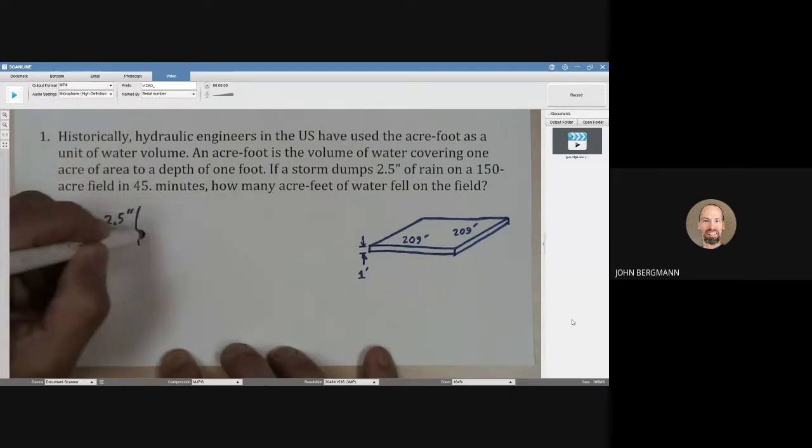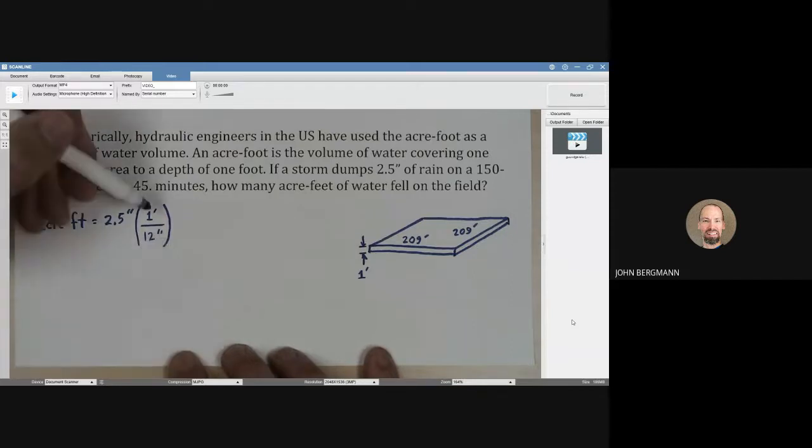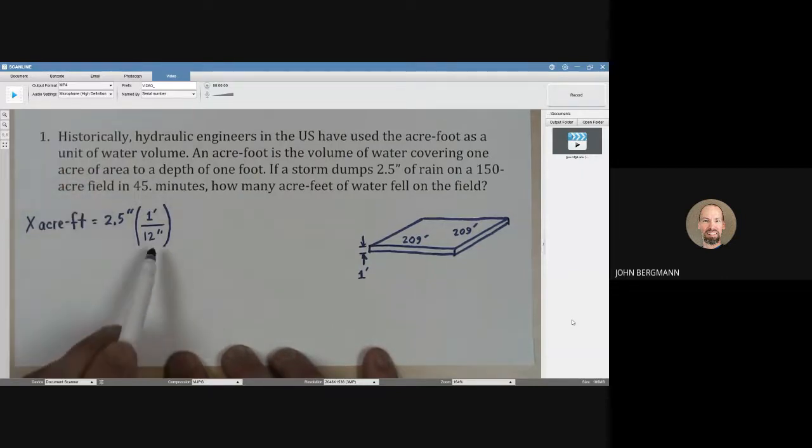I suppose you could look this up, but honestly, I hope you know that there are 12 inches in one foot. And this is the abbreviation for inches. It's quotation marks. And the abbreviation for foot is a single quotation mark. The way you can remember that is the word foot has one syllable, and the word inches has two syllables.